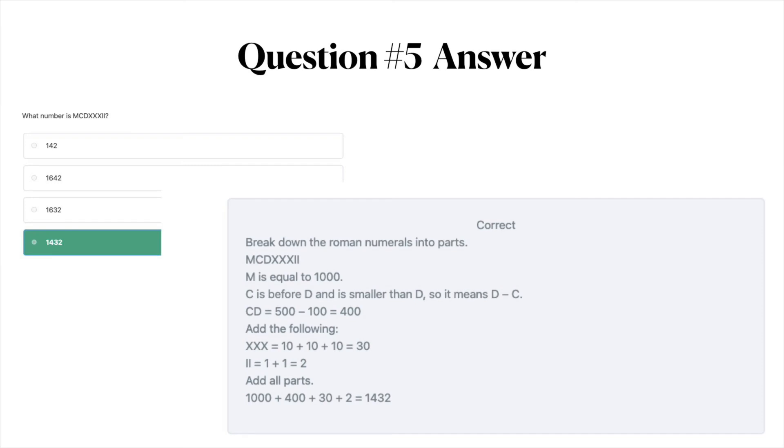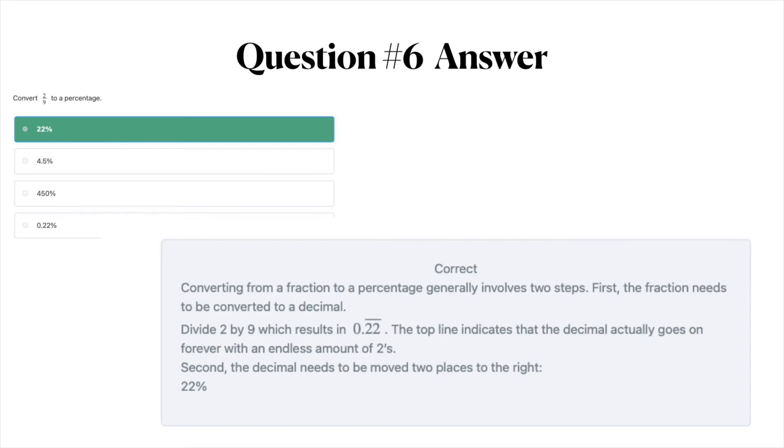Moving on to question number six. The answer to question number six is A, 22%. Converting from a fraction to a percentage generally involves two steps. First, the fraction needs to be converted to a decimal. Divide 2 by 9 which results in 0.22 with a line on top. That top line indicates that the decimal actually goes on forever with an endless amount of twos. Second, the decimal needs to be moved two places to the right. So that's 22%. Now moving on to question number seven answer.